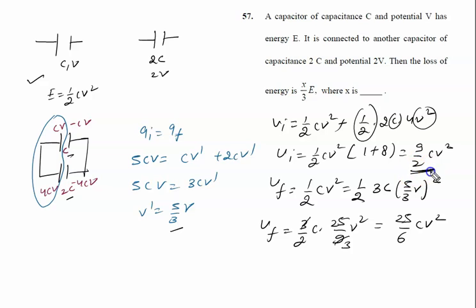This is initial energy and this is final energy. We have to calculate the loss of energy. So loss of energy is given by 9 by 2 CV square minus 25 by 6 CV square.